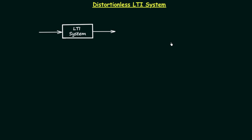In the last two lectures we have seen what is magnitude distortion and phase distortion. Now in this lecture we will talk about distortionless LTI systems. We will find the conditions for an LTI system to be distortionless. On your screen you can see one black box. Inside this box there is an LTI system, and let's say the input to this LTI system is equal to x(t) and the output is equal to y(t).